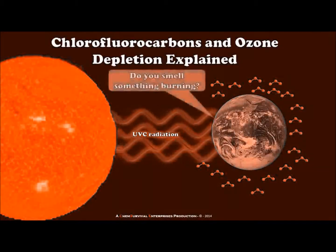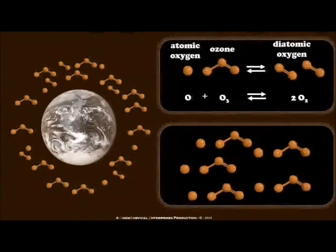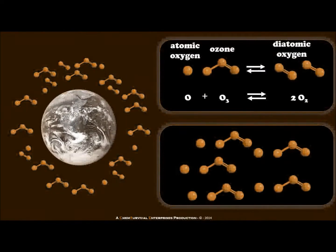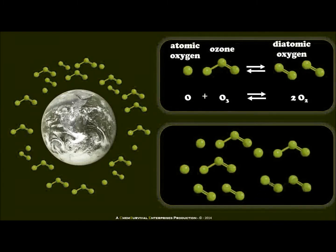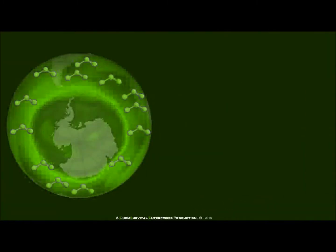Ozone is a form of oxygen. An ozone molecule consists of three oxygen atoms, while an ordinary oxygen gas molecule has two oxygen atoms. Most ozone is found in the upper atmosphere, where it is produced in small amounts. The ozone molecules in the upper atmosphere absorb most of the sun's harmful ultraviolet rays before they reach the Earth.